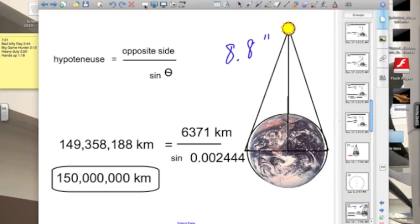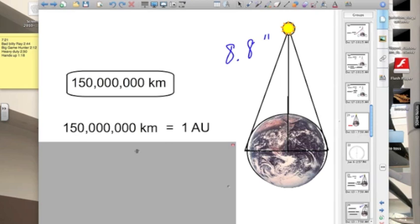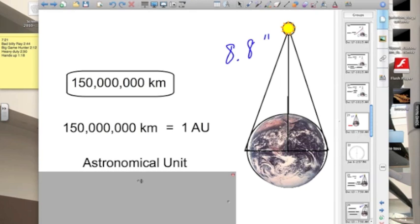Running the calculation then, we come up with 150 million kilometers as the distance to our sun. That is a pretty important number. It's so important that we give this its own value. We call this 150 million kilometers, one astronomical unit, or one AU.